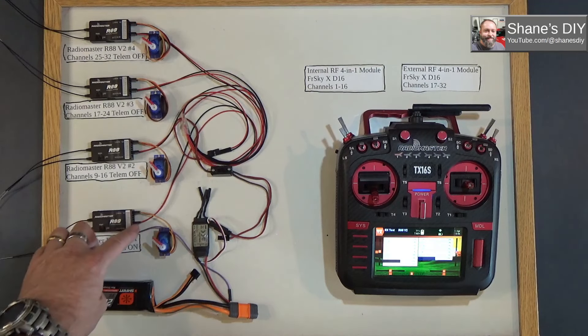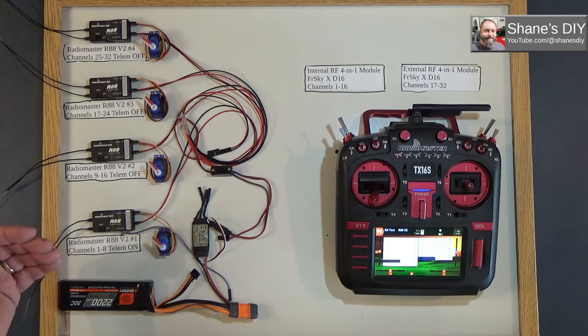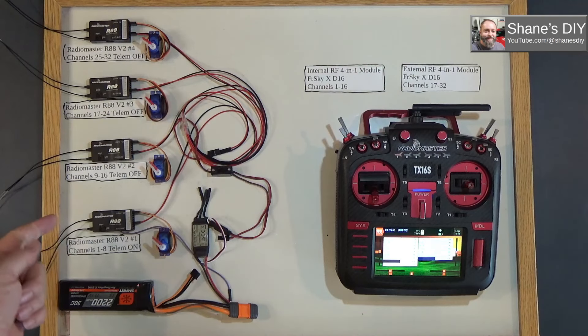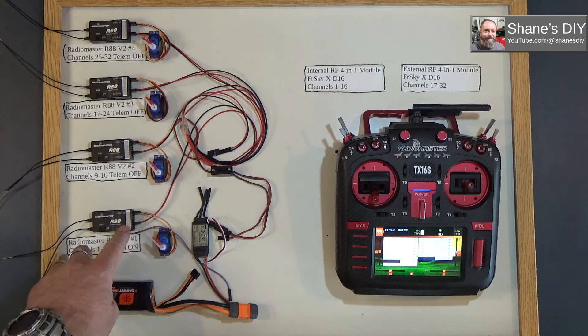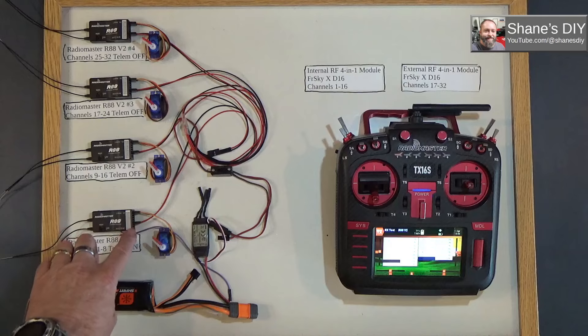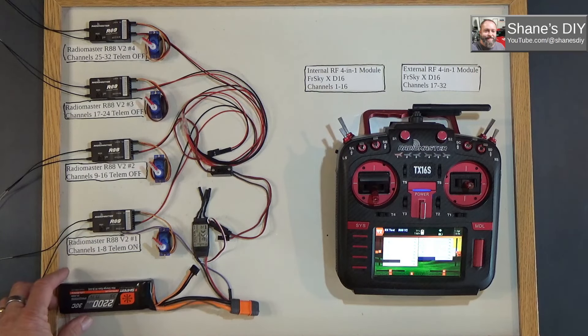Of course, your number 1 receiver will also do your first four primary controls, AETR, but I don't have any servos connected to that. But if I was moving the sticks, you'd get them on those first four channels.